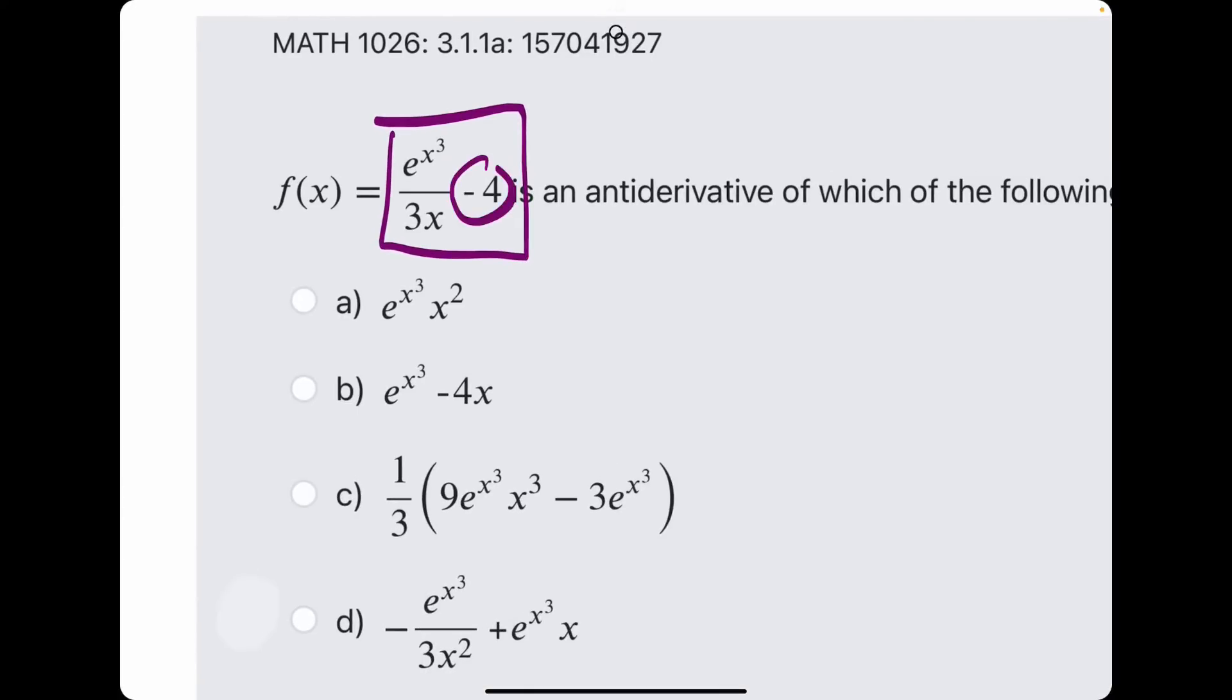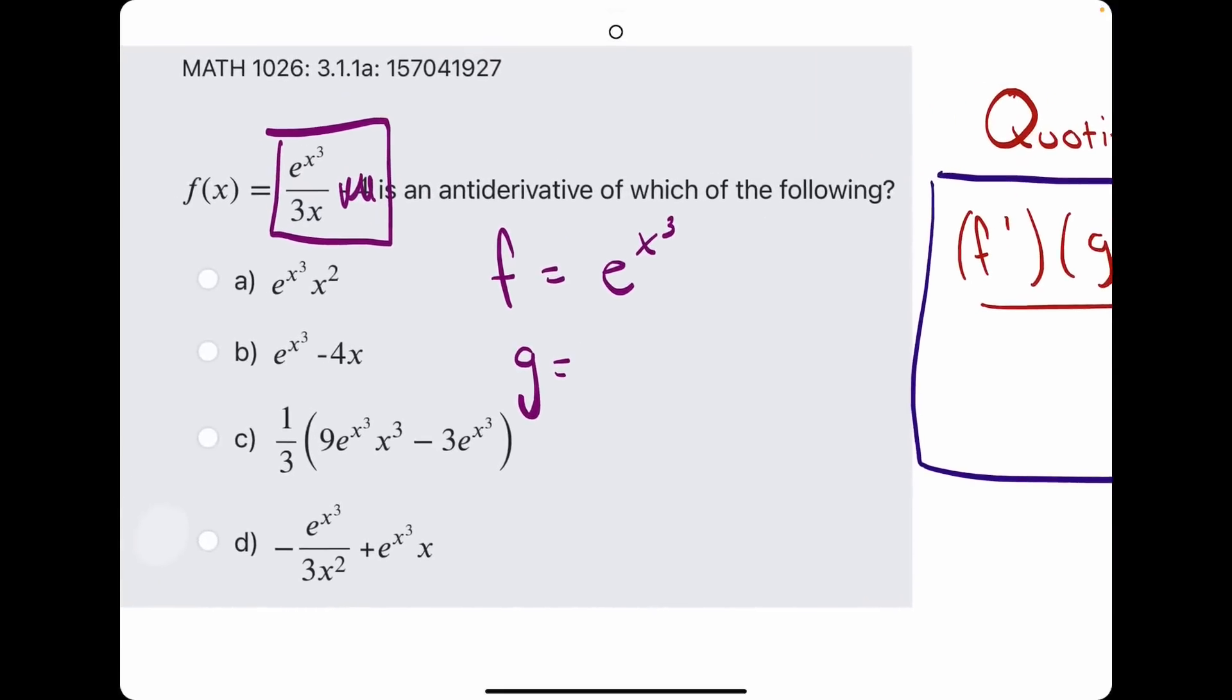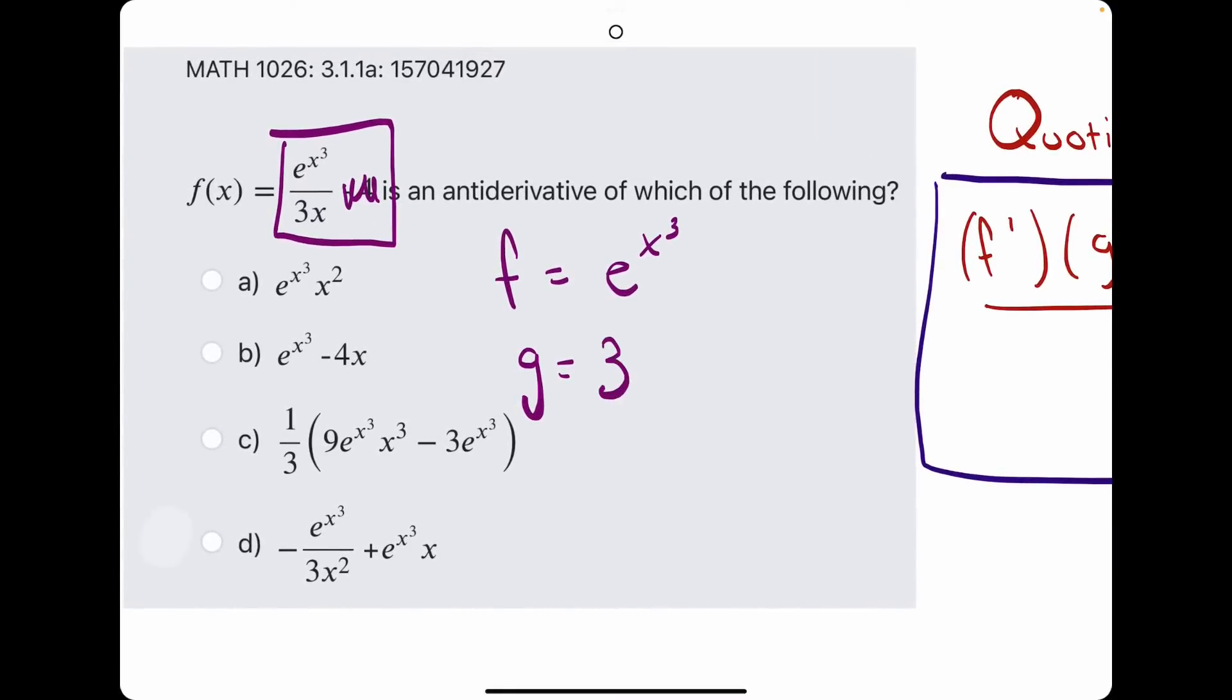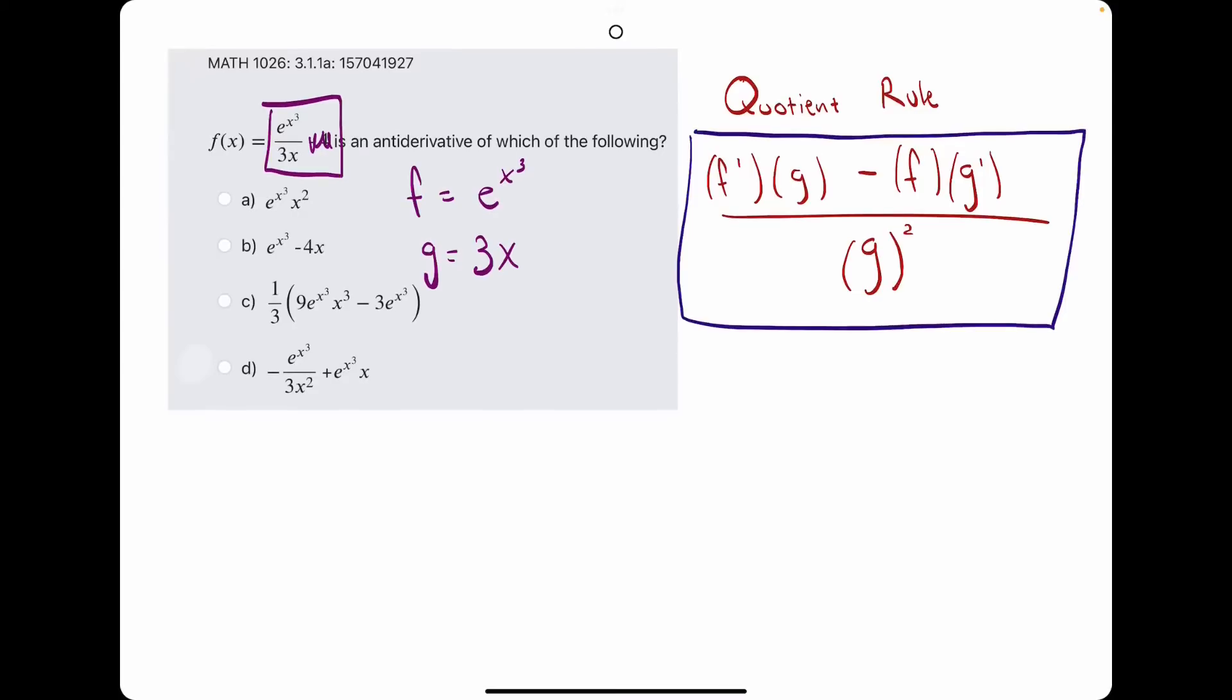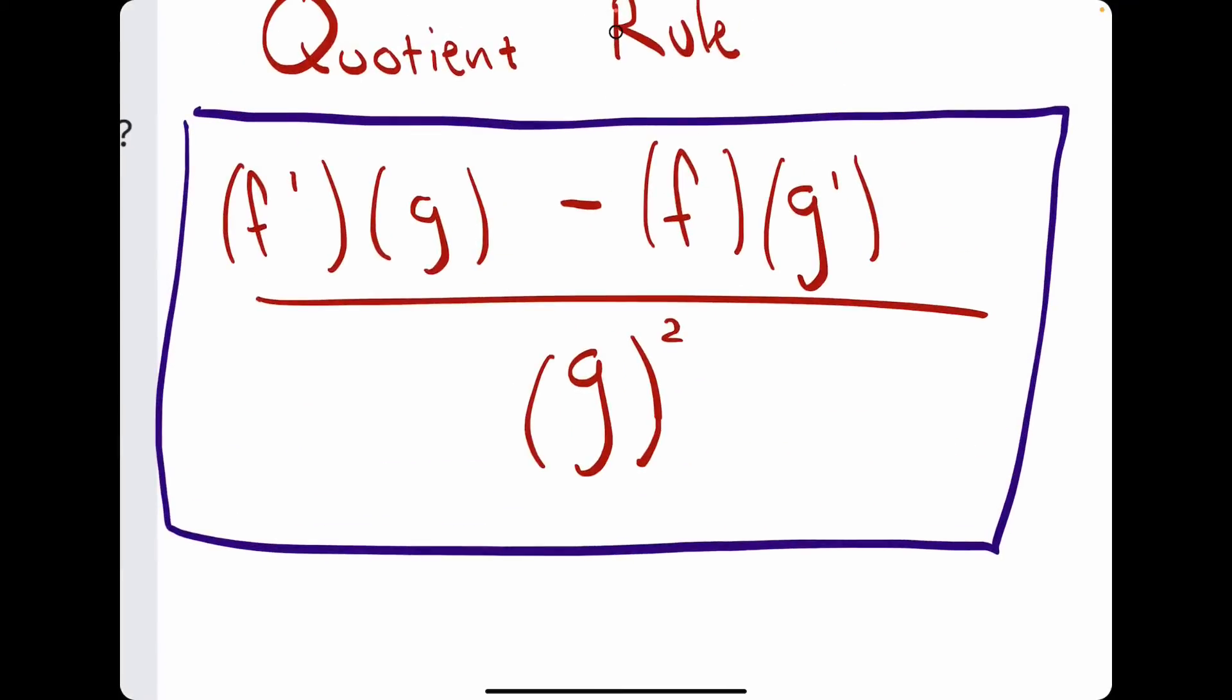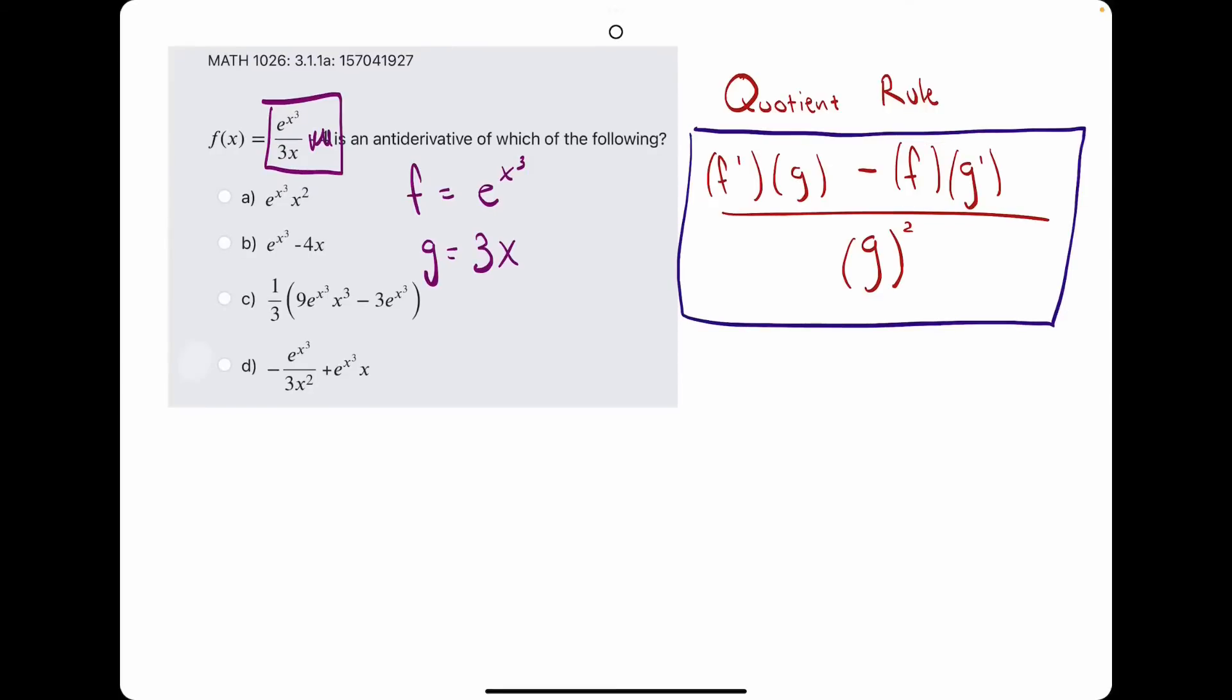Just to mention this minus 4 first, if we take the derivative of minus 4, that'll go to 0, because the derivative of any constant is 0. So, we're mainly focused on the quotient here, the e to the x cubed, which we will call f, and the denominator 3x, which we'll call g. Then, we'll find f prime and g prime, and plug them in to the quotient rule, respectively.